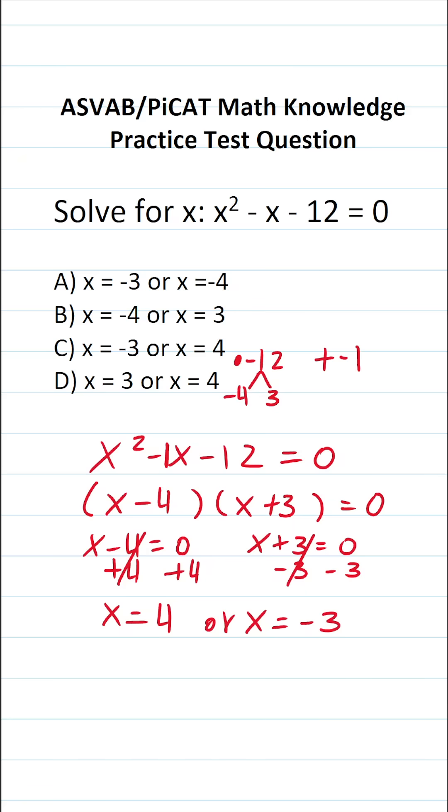So in this case, there's two solutions to this one. x is equal to 4 or x is equal to negative 3. And we can see that that is answer choice C in this case.